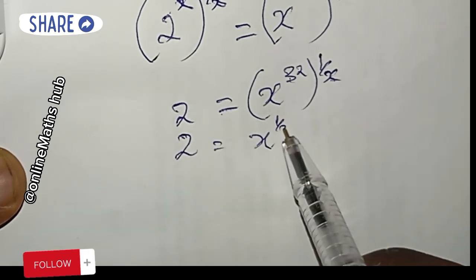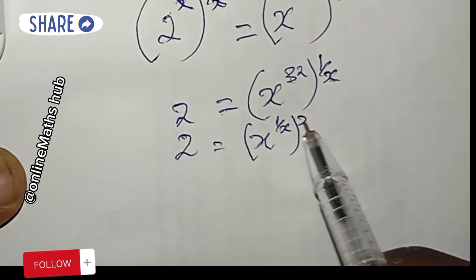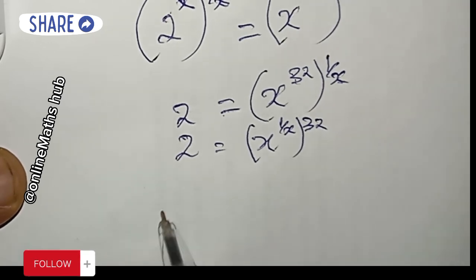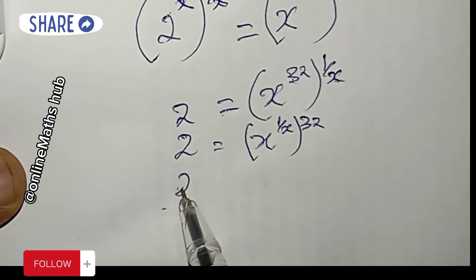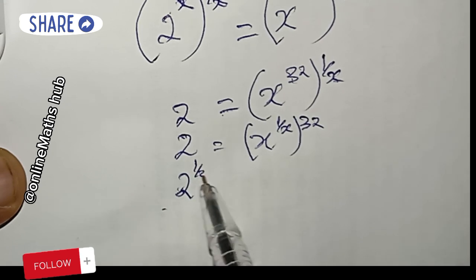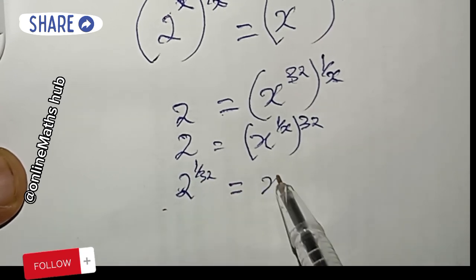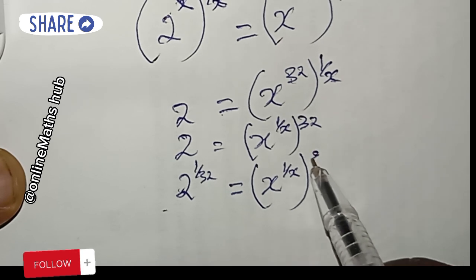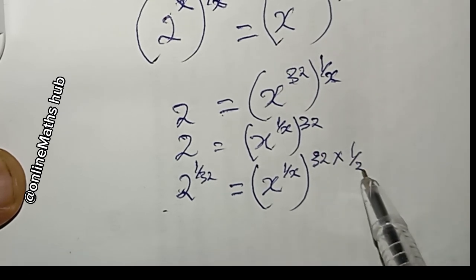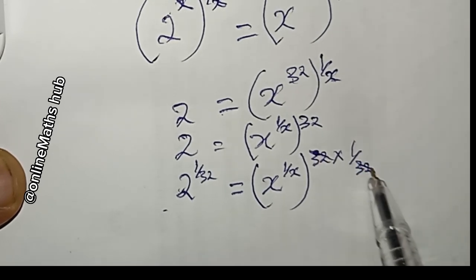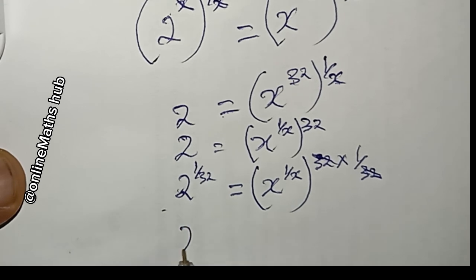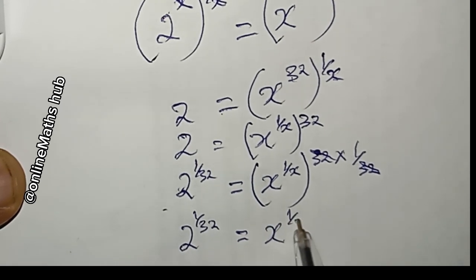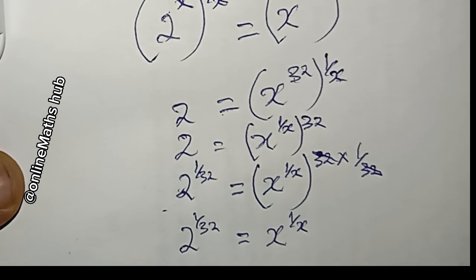Bringing the 1 over x inside gives x to the power 32 times 1 over x. Next, I remove the 32 by raising both sides to the power 1 over 32. This cancels the 32, leaving 2 to the power 1 over 32 is equal to x to the power 1 over x.